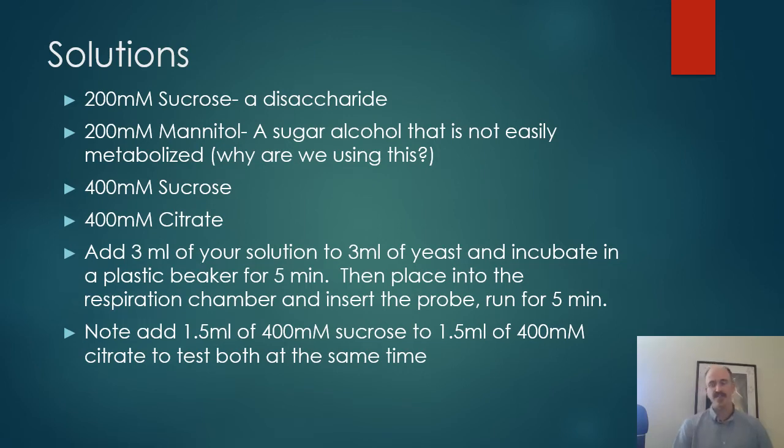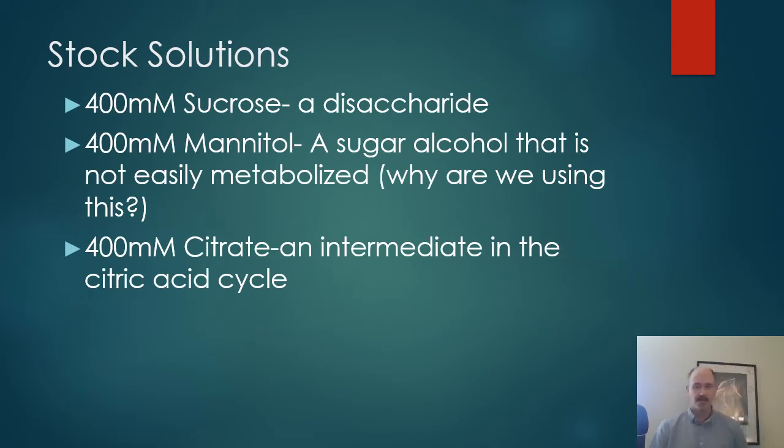Now, we would have a lot of different solutions out this week for you to use in your experiment, including sucrose, a disaccharide. So we're going to use sucrose instead of just straight glucose. We would have mannitol, which is a sugar alcohol that is not easily metabolized. We would have several things out that I'm going to introduce you to in the next slide. So I'm just going to skip past this slide since we're not actually doing the experiment this week and show you what the basic stock solutions are. We would have 400 millimolar sucrose, once again, a disaccharide, 400 millimolar mannitol, a sugar alcohol that is not easily metabolized. We'll talk about why we have that in a moment. And we would have citrate. Citrate is where the citric acid cycle gets its name.